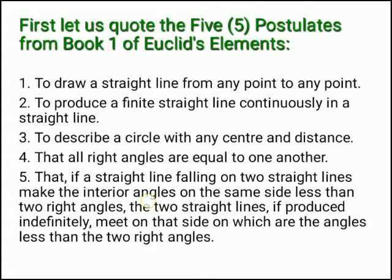Here are the five postulates. Postulate one: to draw a straight line from any point to any point. Postulate two: to produce a finite straight line continuously in a straight line. Postulate three: to describe a circle with any center and distance. Postulate four: that all right angles are equal to one another. And lastly, postulate five: that if a straight line falling on two straight lines makes the interior angles on the same side less than two right angles, the two straight lines, if produced indefinitely, meet on that side on which are the angles less than the two right angles.